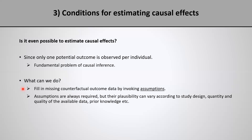In our case, the missing data we are trying to fill in is the counterfactual outcome data, which is missing given the fundamental problem of causal inference. Whenever we are trying to estimate causal effects, we are always going to need assumptions. However, the plausibility of the assumptions we need can vary according to study design, quantity and quality of the available data, prior knowledge, etc. So although the need for assumptions is universal when it comes to causal inference, the plausibility of the assumptions is not always the same — it can be greater or lower depending on the situation.